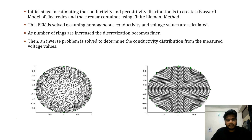The initial stage in estimating the conductivity and permittivity distribution inside an object under study is to create a forward model of the electrodes and the circular container using the finite element method. Here we generate a mesh of the object using finite element analysis. The forward model generated using finite element method is solved assuming homogeneous conductivity, and voltage values are calculated. The mesh becomes finer as we increase the number of elements in our setup.